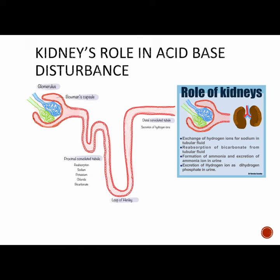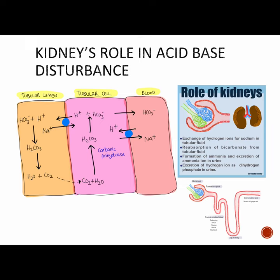This picture will help you understand basic renal physiology. The major reabsorption of sodium, potassium, chloride, and bicarbonate happens in the proximal convoluted tubule, whereas secretion of hydrogen ion takes place in the distal convoluted tubule. The kidney helps in compensation through exchange of hydrogen ions for sodium in tubular fluid, reabsorption of bicarbonate from tubular fluid, formation of ammonia and excretion of ammonium ion in urine, and excretion of hydrogen ion as dihydrogen phosphate in urine. Basically, the kidney can alter the pH of blood and urine by excreting what is unnecessary and conserving what is necessary.